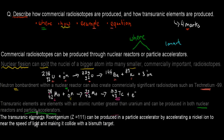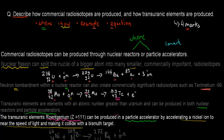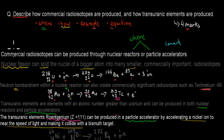As an example of a transuranic element: roentgenium, with atomic number 111, can be produced in a particle accelerator by accelerating a nickel ion to near the speed of light and making it collide with a bismuth target. The equation shows nickel-64 bombarded into bismuth-209, producing roentgenium-111 — a transuranic element because its atomic number is greater than 92 — along with a neutron as a byproduct.